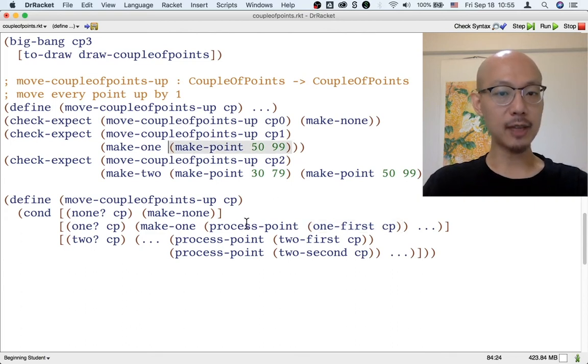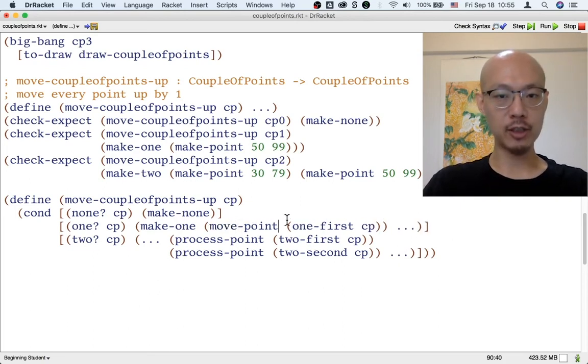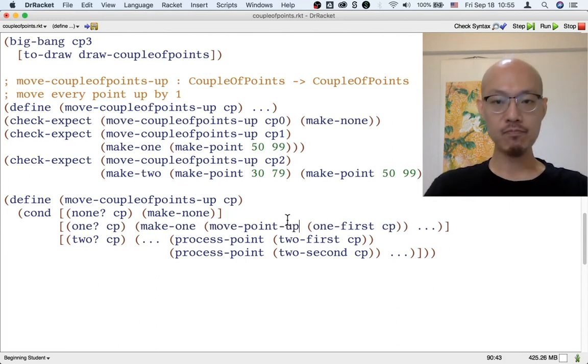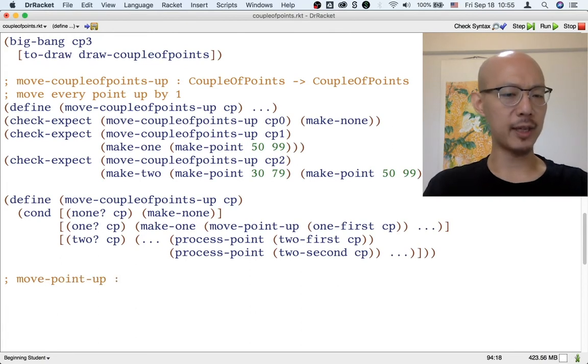That seems like a good thing for a helper function to do. And the template again suggests that we write such a helper function. Maybe we could write a helper function called move point up. It would be great to have such a helper function.